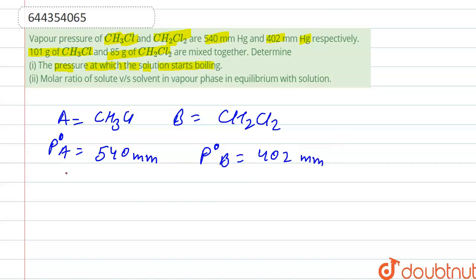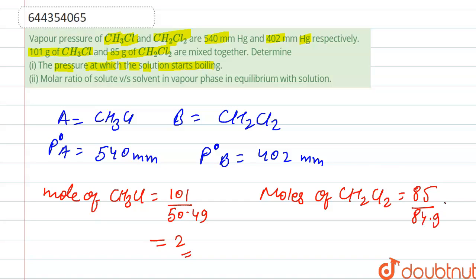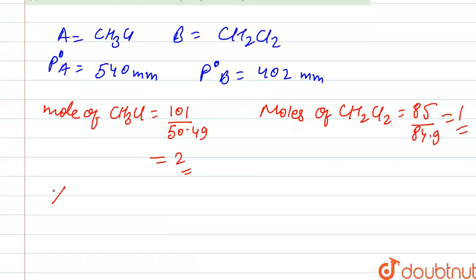We calculate the moles of CH₃Cl: given mass is 101 and the molecular mass of CH₃Cl is 50.49, which gives approximately 2 moles. The moles of CH₂Cl₂: given mass is 85 and the molecular mass is 84.9, which is approximately 1 mole.